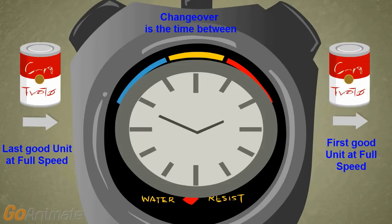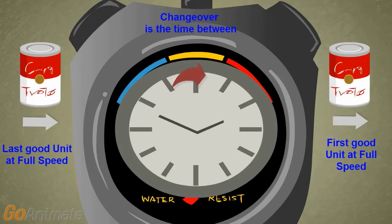The changeover time starts from the production of the last good unit and ends when the first good unit of the next order is produced at full speed.